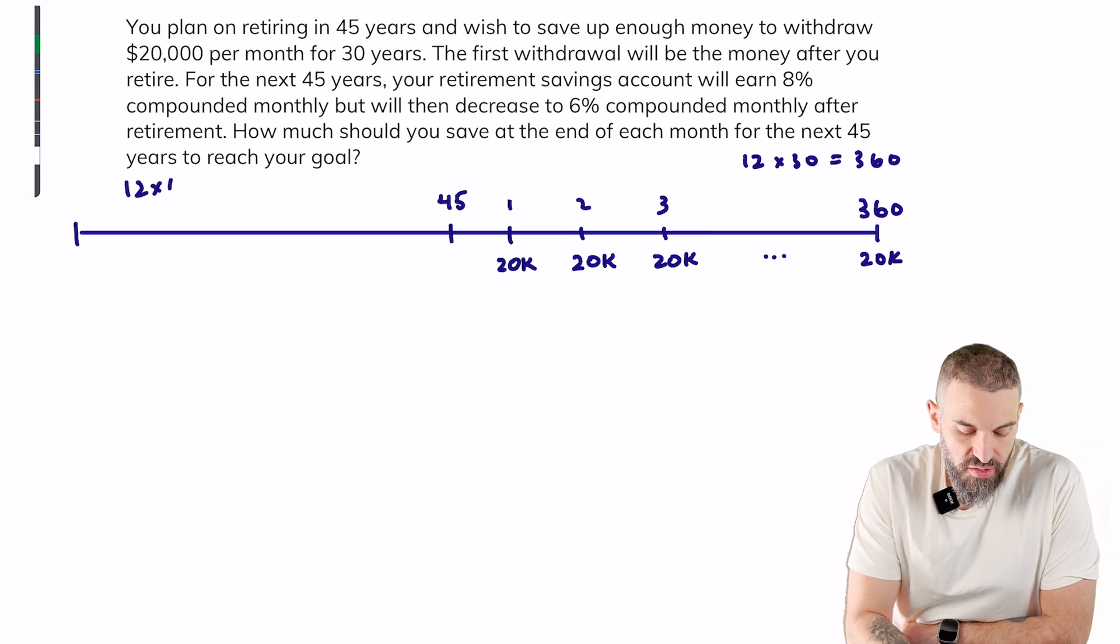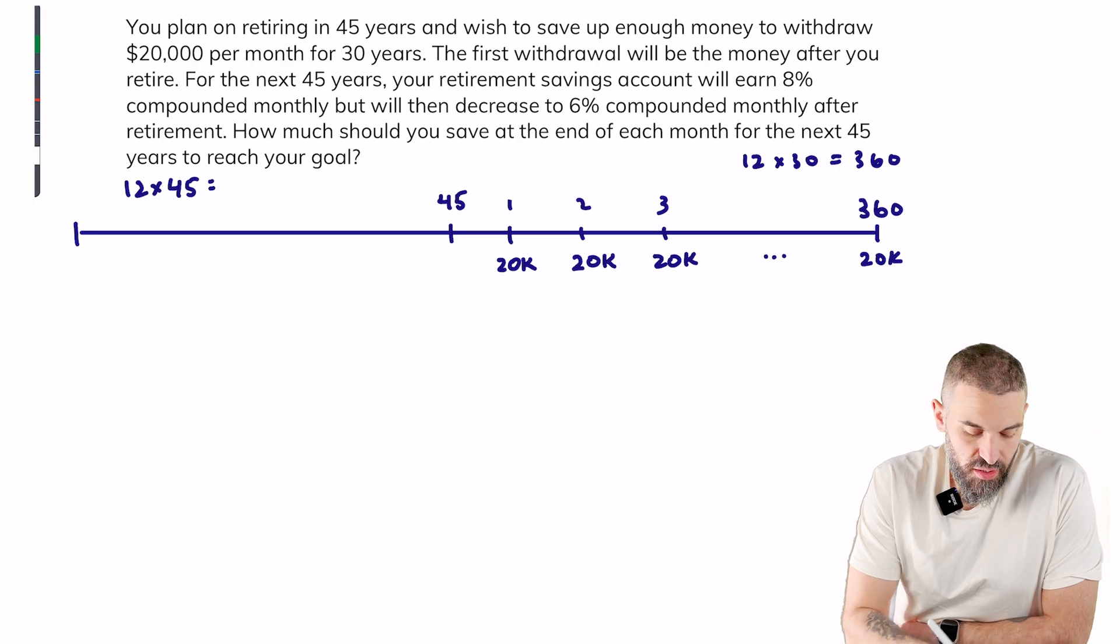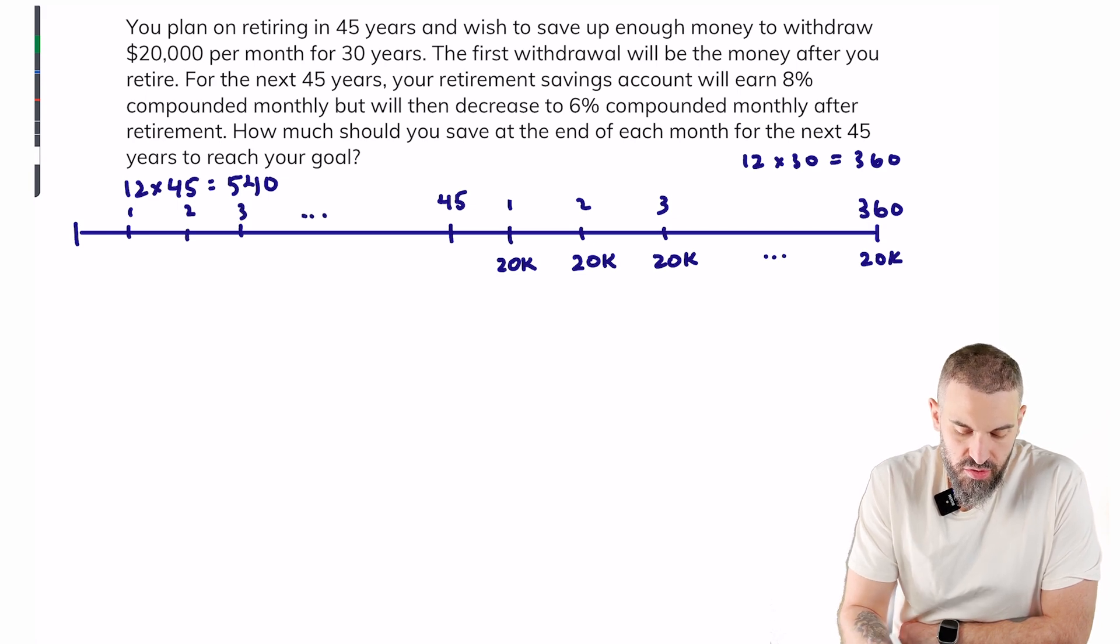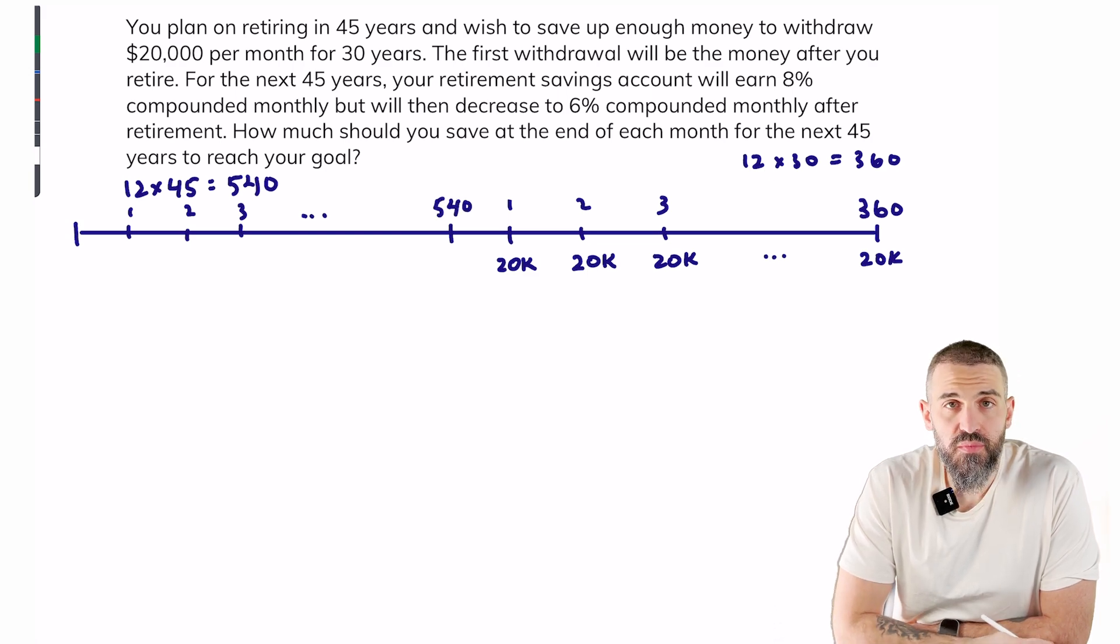How much should you save at the end of each month? Great, so we know that for the next 45 years every month we're going to be saving, so 12 times 45 is 540.